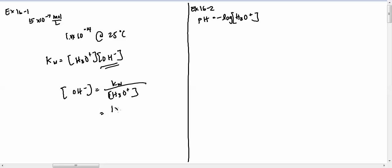That's just plugging numbers in. So I've got 1 times 10 to the negative 14 divided by 5 times 10 to the negative 7. All the units is moles per liter.